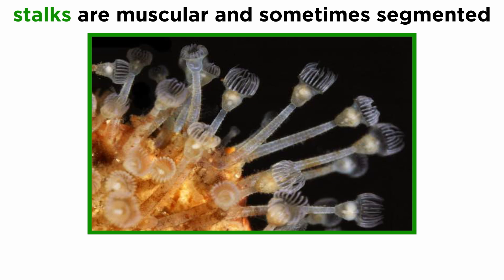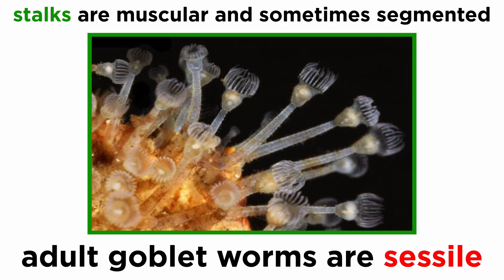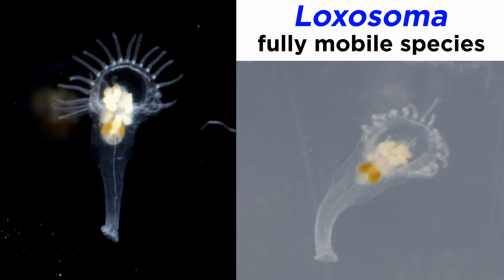Stalks of all goblet worms are muscular and occasionally segmented. As such, most goblet worms are sessile as adults, but many solitary species, such as the members of genus Loxosoma, are mobile.